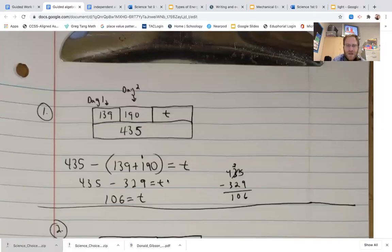All right, so let's go ahead and talk about these problems. We know we started with 435, and in day one we took out 139, and then in day two, 190, and we were left with T.